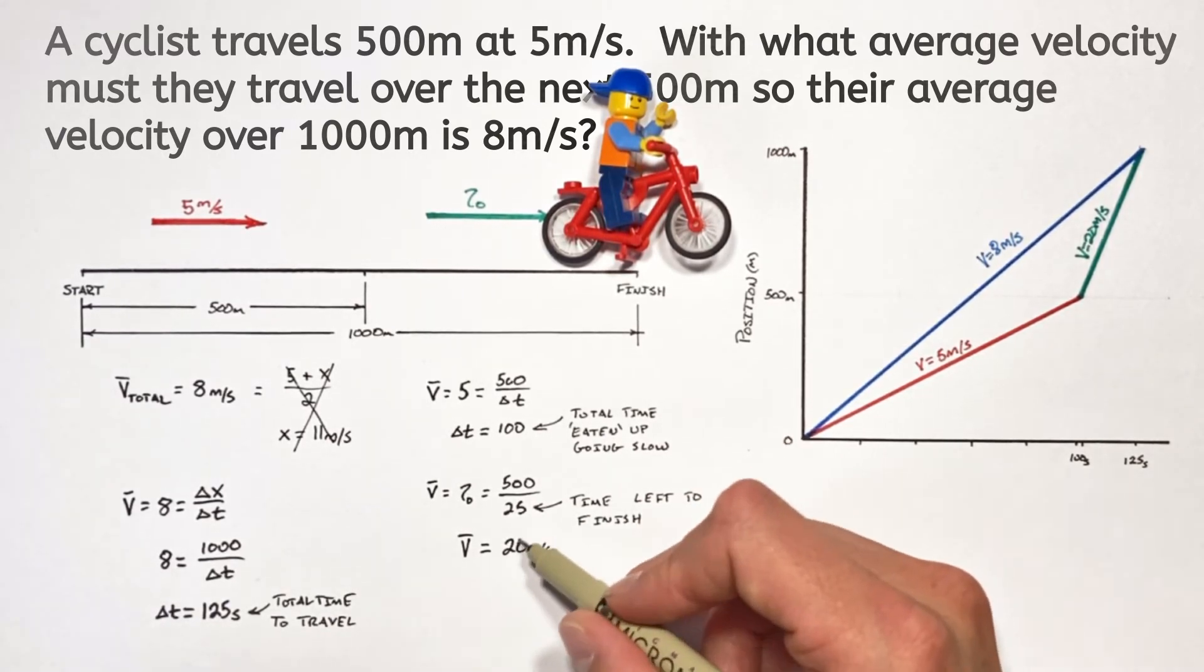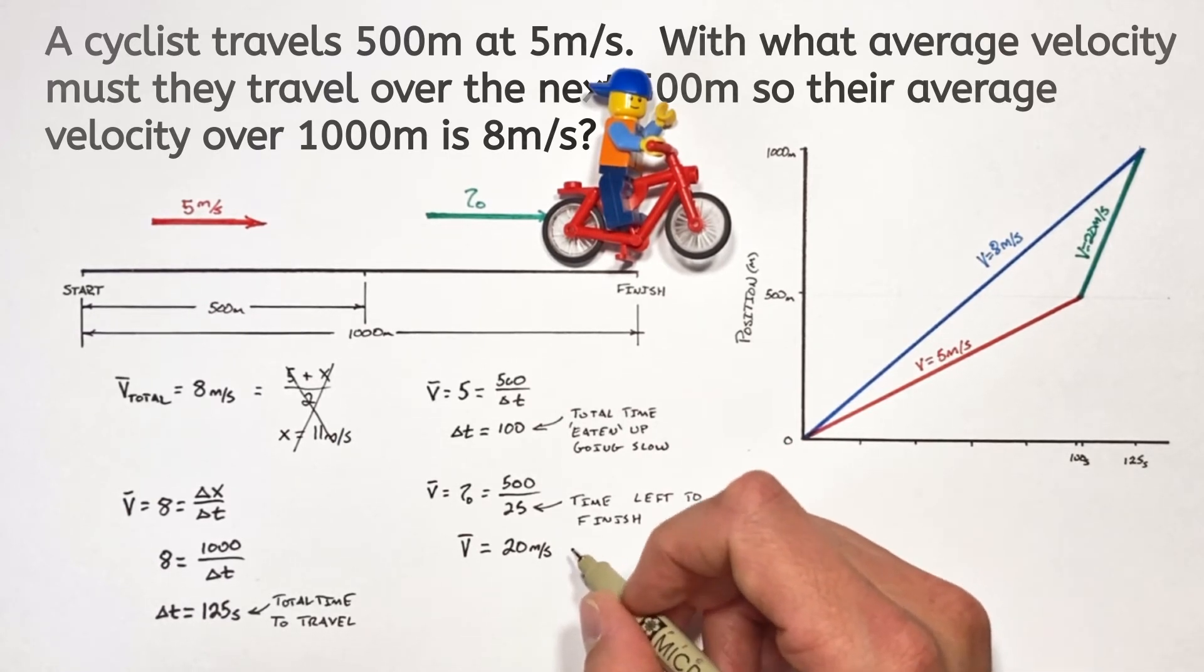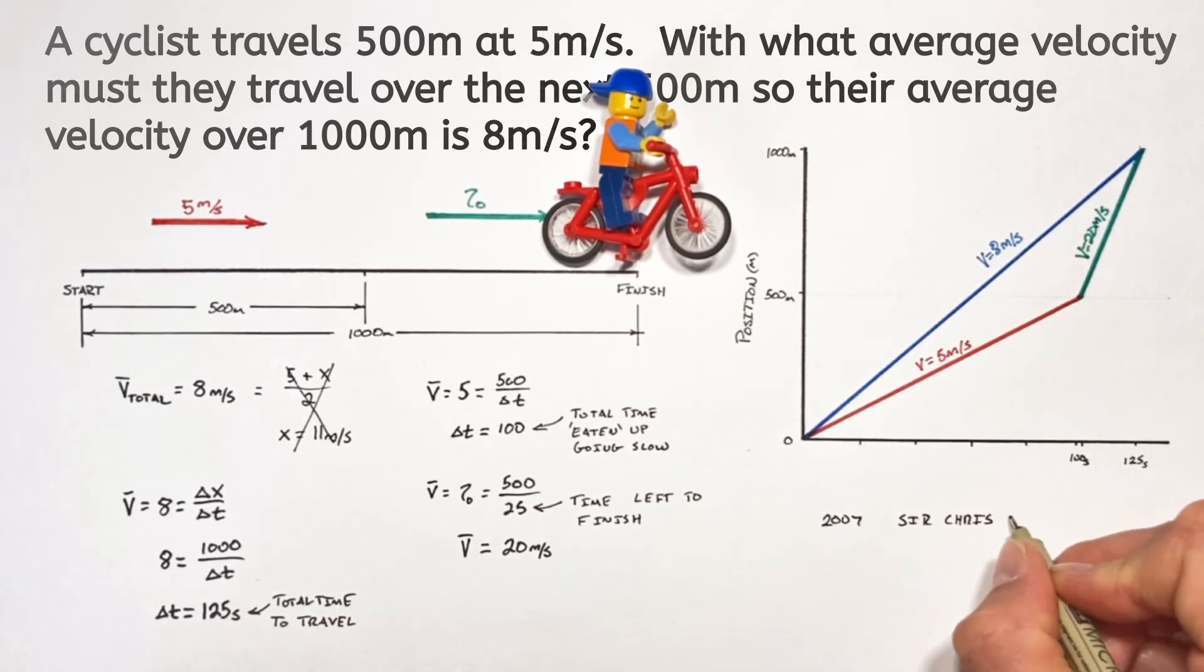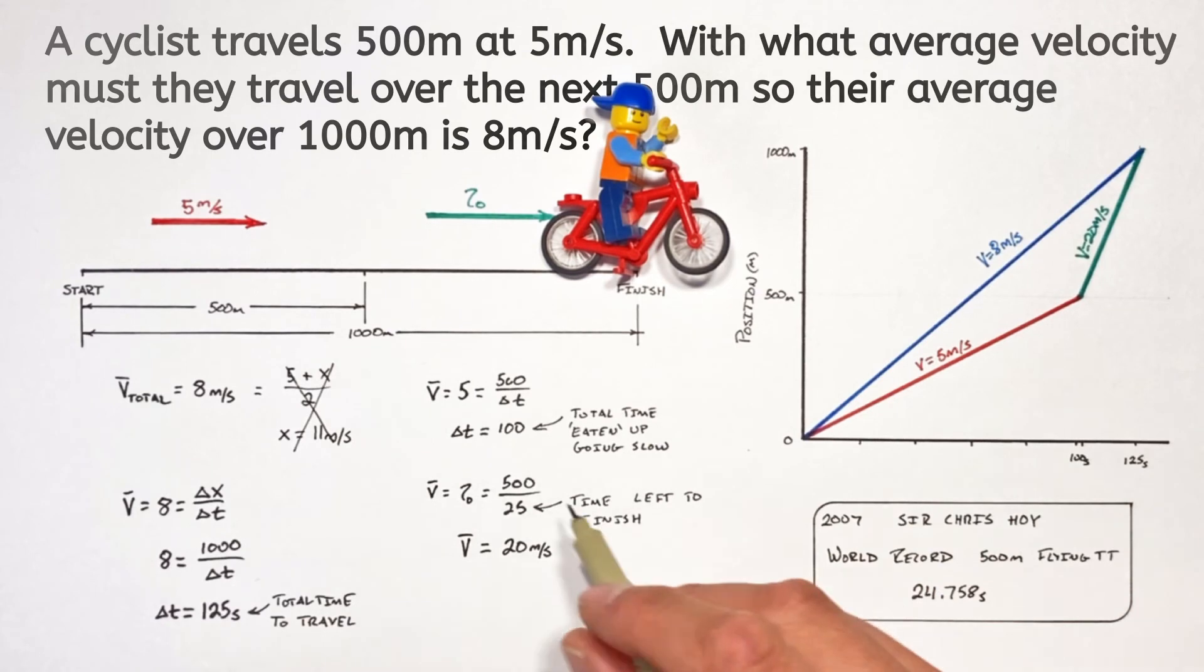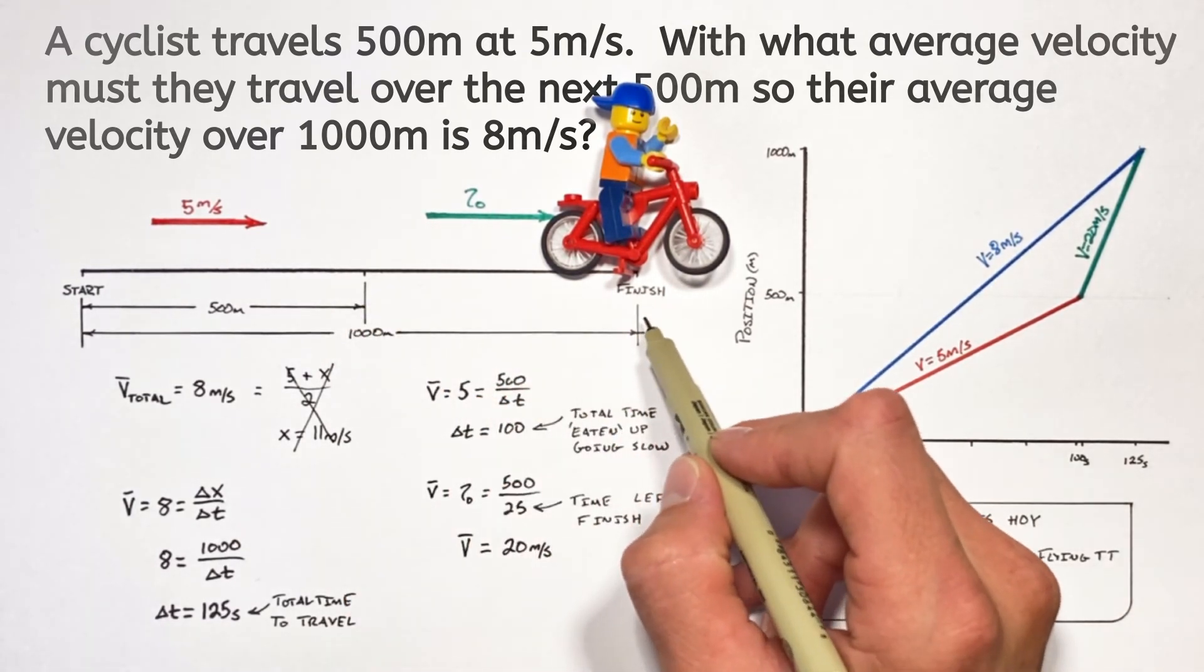Now the question comes up, is 20 meters per second across flat ground on a bicycle even possible? And the answer is, well, sort of, for a few of you. You see, in 2007, Chris Hoy set the world record over 500 meters, 24.758 seconds. Which is just underneath our 25 seconds that our little dude left himself to get to the finish.